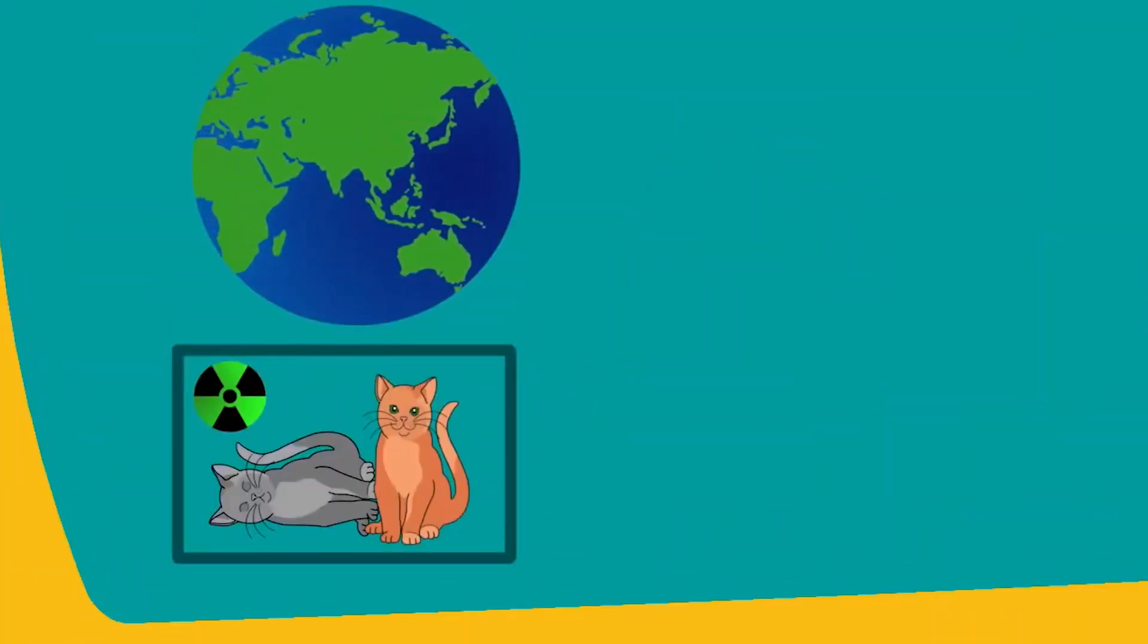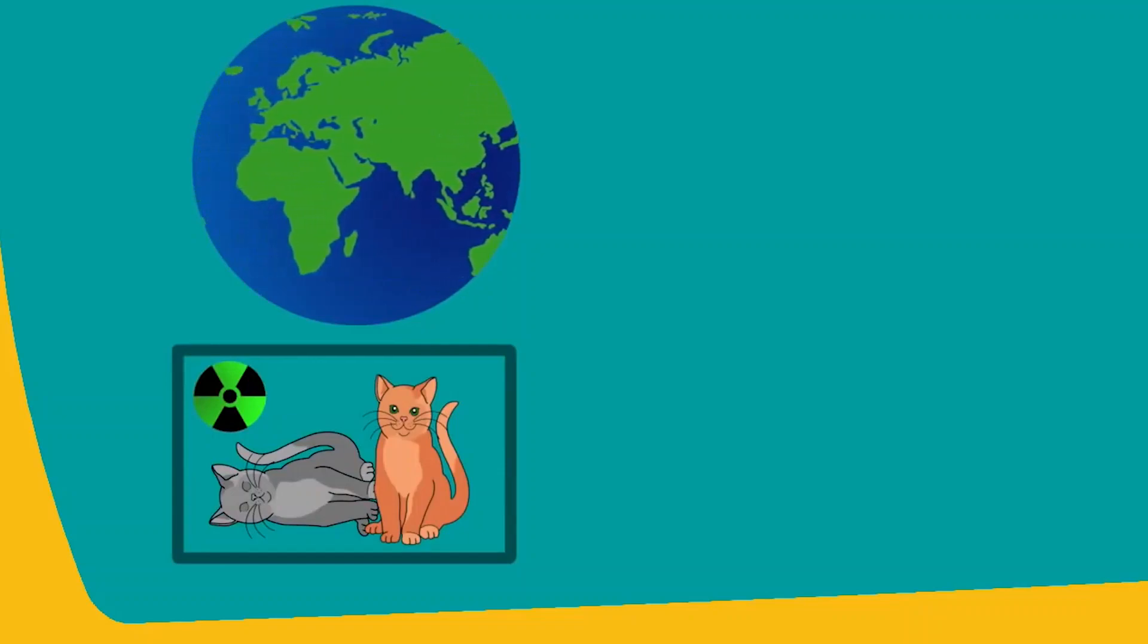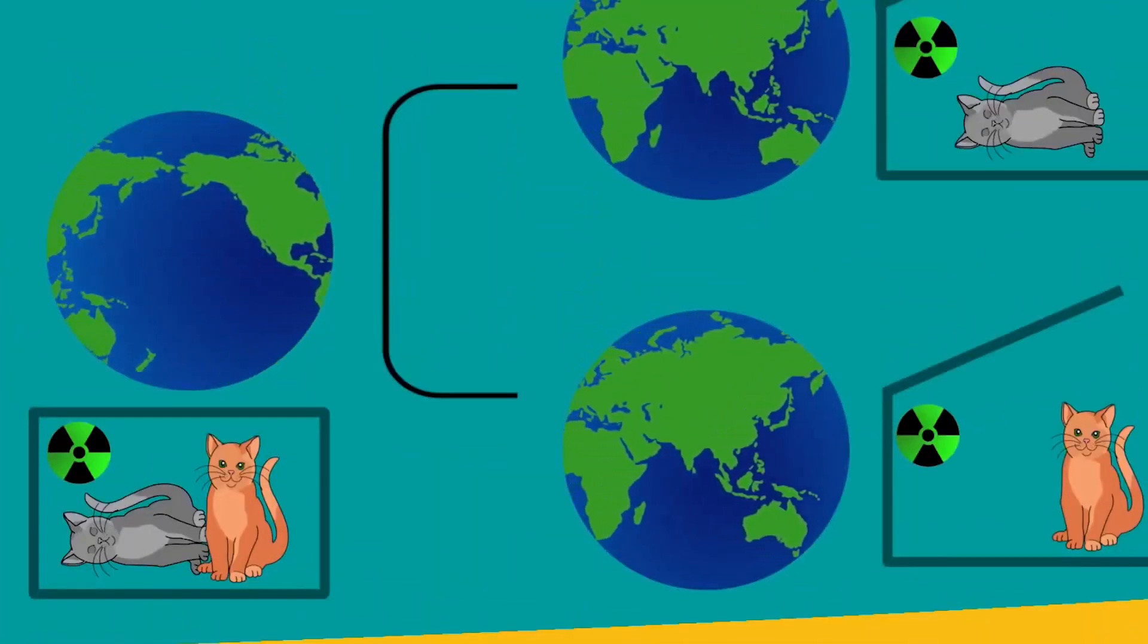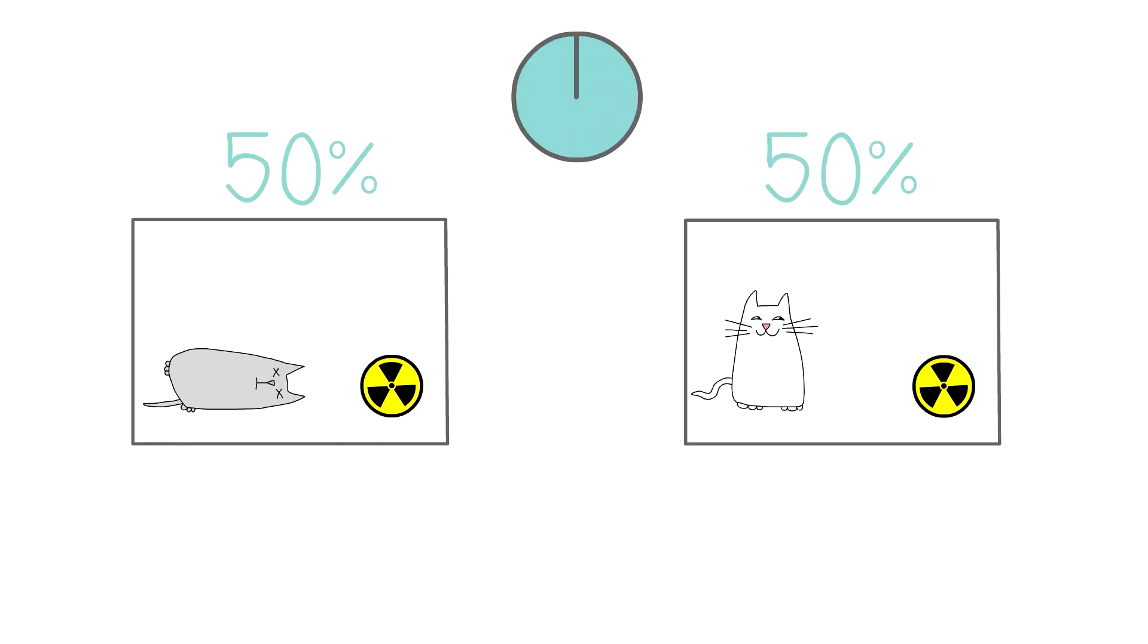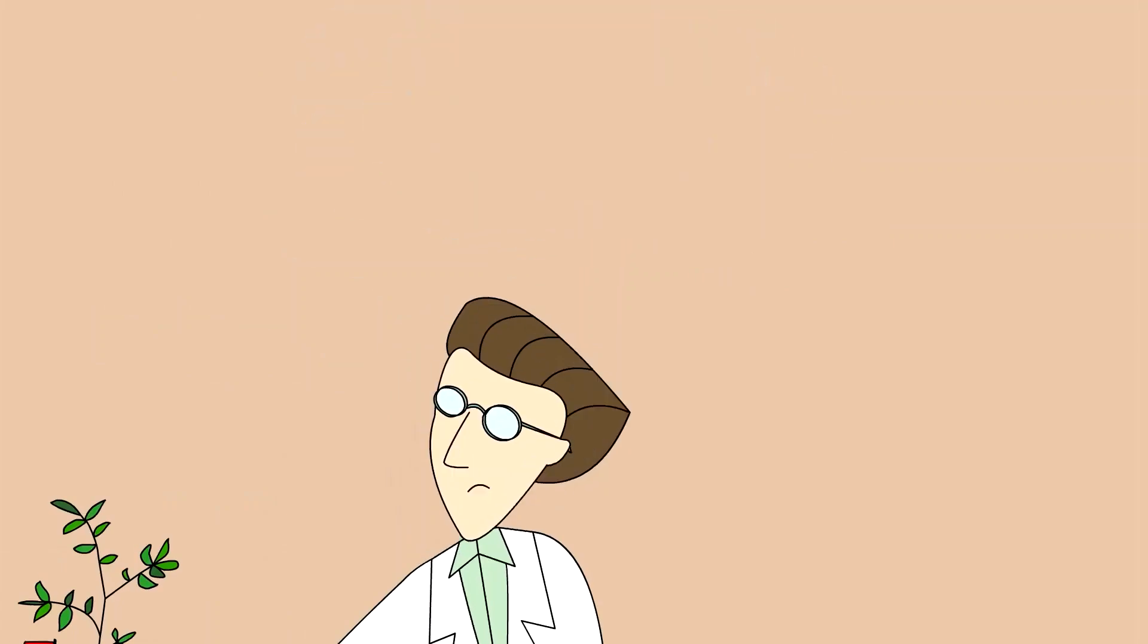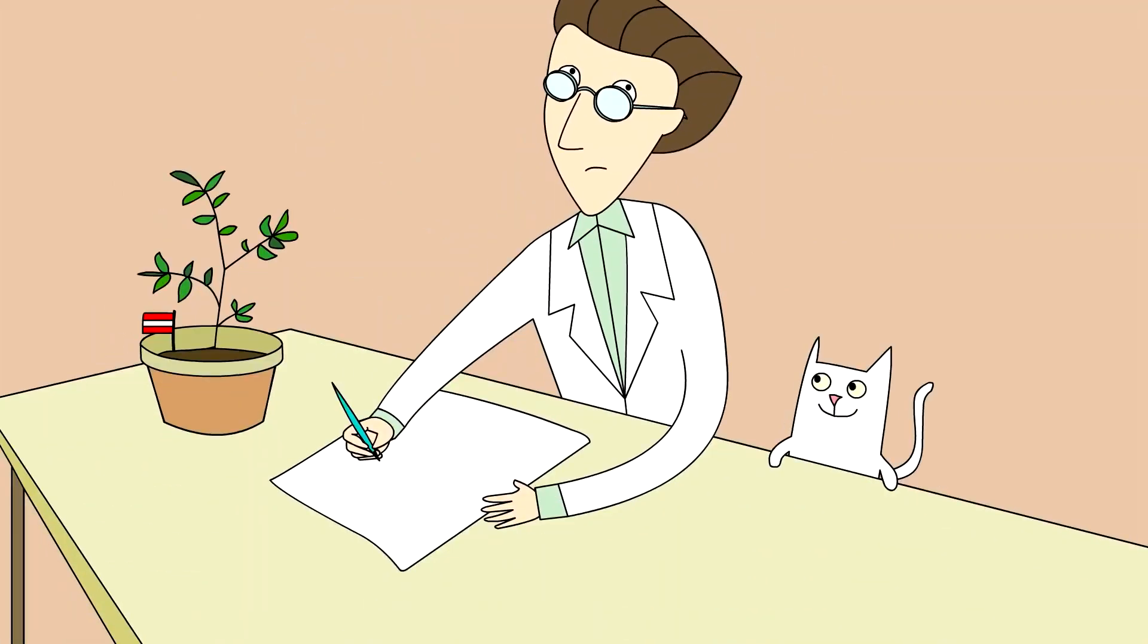The result would be weirder if cats acted as a photon, as we know the particles can exist in both forms, a particle and a wave. In this thought experiment, the cat can be both alive and dead at the same time. This is referred to a superposition in quantum physics.